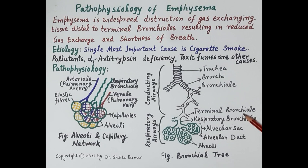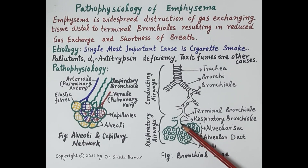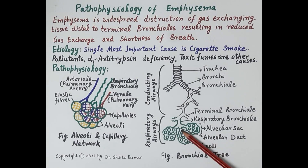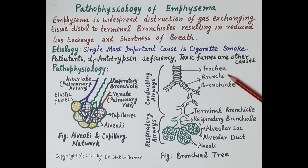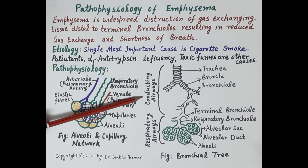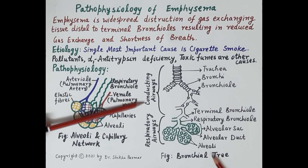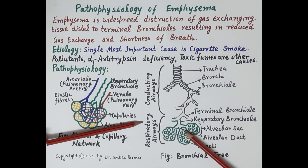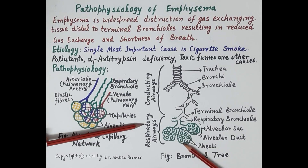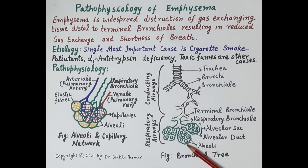A terminal bronchiole conducts air into the respiratory bronchiole. From the respiratory bronchiole, the air moves into the alveolar duct and from the alveolar duct into the alveoli, or air sacs, where gaseous exchange takes place. The trachea, bronchi, and bronchioles along with the terminal bronchiole are referred to as conducting airways, as their main function is to conduct air to the alveoli. The respiratory bronchiole, alveolar duct, and alveoli are the main structures required for actual gaseous exchange.